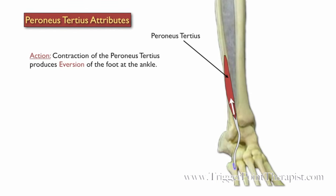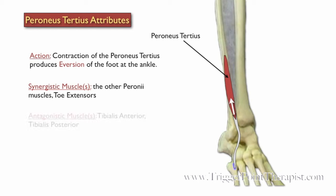Contraction of the Peroneus Tertius produces eversion of the foot at the ankle. The synergistic muscles for the Peroneus Tertius are the other Peronei muscles and the toe extensors, and the antagonistic muscles are the tibialis anterior and tibialis posterior.